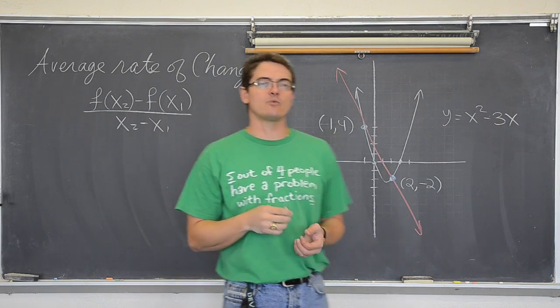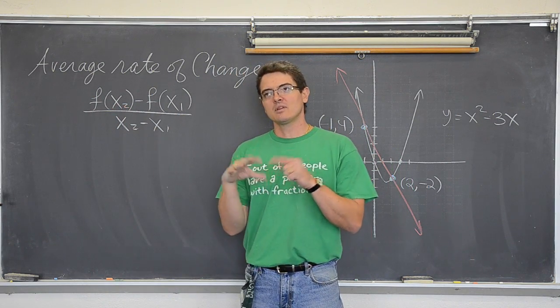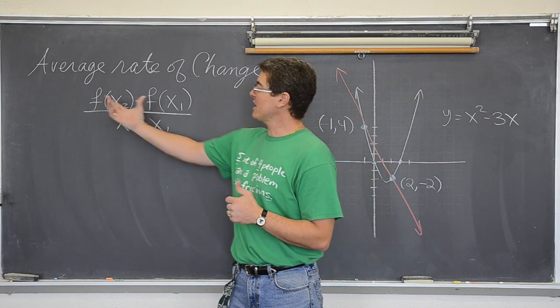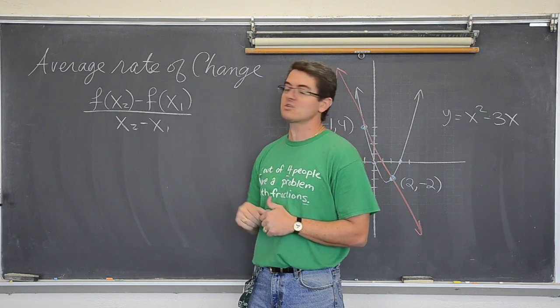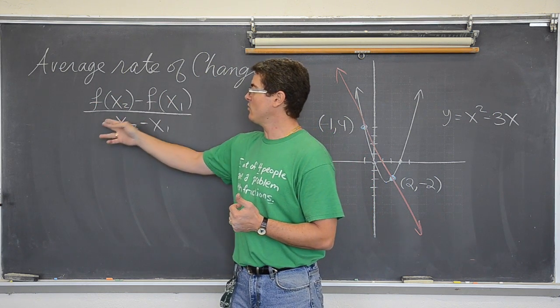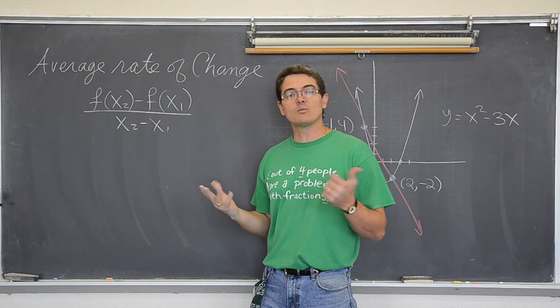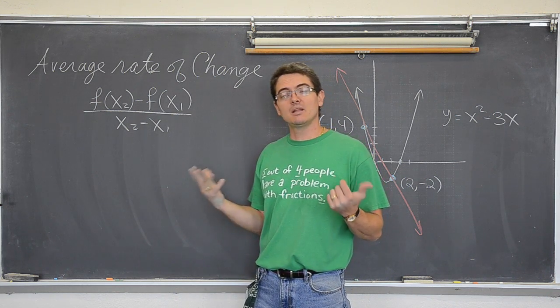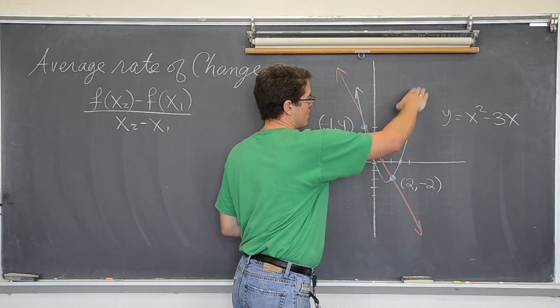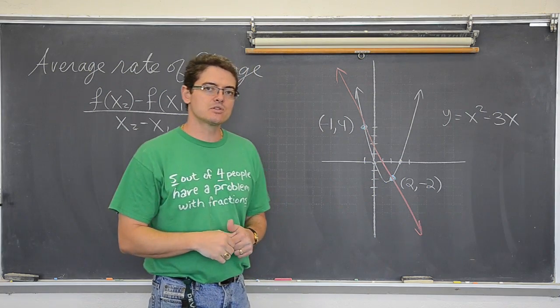If you know your function notation well now, you will remember that f of x is our fancy way of saying y. This would be like function notation for y sub 2 and function notation for y sub 1. If you are thinking y sub 2 minus y sub 1 over x sub 2 minus x sub 1, you might be thinking that sounds like slope. It is the same process as finding slope, but it is of a curved graph and so we must call it average rate of change.